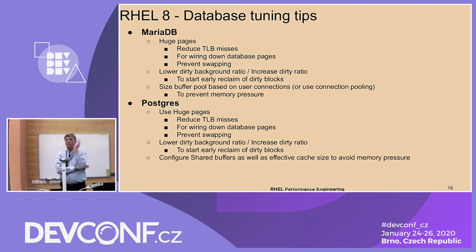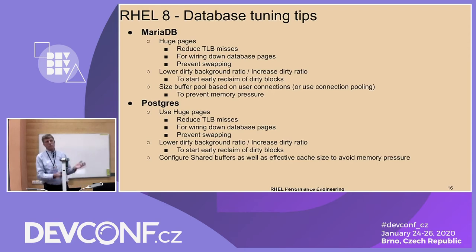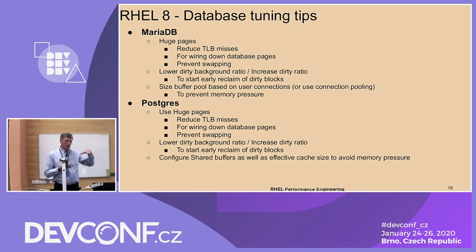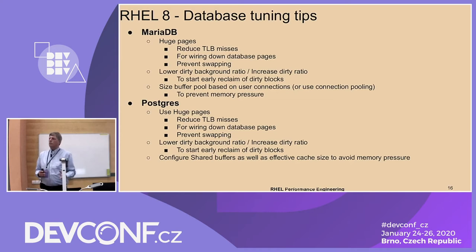Now for database tuning tips — real-world applications. Both MariaDB and PostgreSQL, and all databases, share a fairly common set of tuning parameters you'll find in the TuneD database profile. There'll be a generic database TuneD profile, and then one specific to the database you're running. For almost all databases, you almost always want to use huge pages. Huge pages are removed from the page list so the system can't reclaim them — it's like you booted without that memory and set it aside for the database. This reduces TLB misses, wires down pages, and prevents swapping.